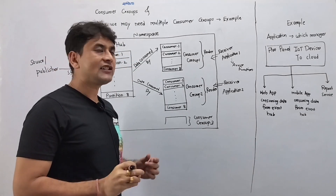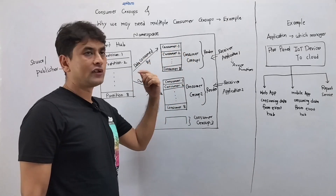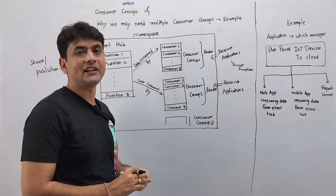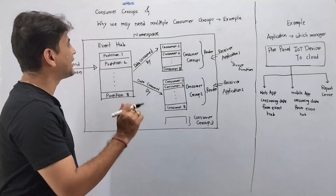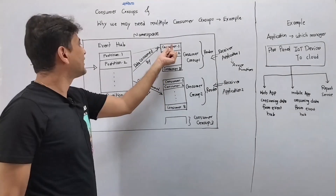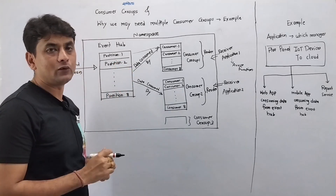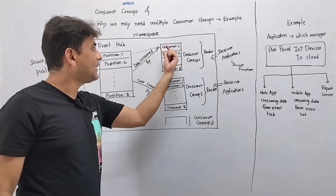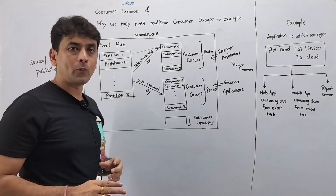Now let's try to understand the internal structure of a consumer group. Internally a consumer group contains consumers. You can see this consumer group has consumer 1, consumer 2 — it has a total of 8 consumers. Each of these consumers will read data from its respective partition. So consumer 1 reads from partition 1, consumer 2 reads from partition 2, and so on. We may also have multiple consumers consuming data from the same partition — that is also possible.